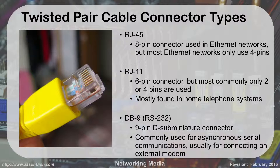The last connector type is the DB9, also called RS232 — a nine-pin D sub-miniature connector, which is our serial port connector. When we dealt with rollover cables from Cisco, one end would have an RJ45 and the other end had a serial connector, a DB9. This is used for asynchronous serial communications for connecting external modems or using a rollover cable to configure a switch.